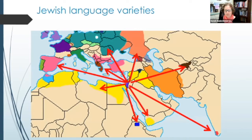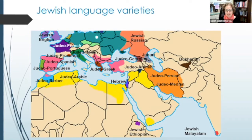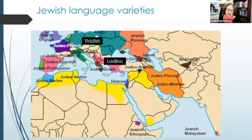How did Jews get to various places? The Israelites became the Jews, and they began in the land of Israel, and at various points in history made their way to other places. In each of those places, they picked up the local language and Judeified it. So you get languages like Judeo-Persian, Judeo-Arabic, Judeo-Georgian, and Judeo-French. The two most commonly known Jewish languages are Yiddish and Ladino, and they are actually exceptions in this history because they were maintained for centuries away from the places where they originated.